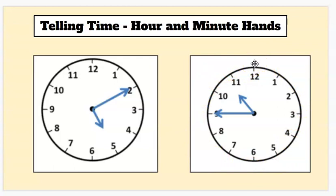Count with me. Zero, five, ten, fifteen, twenty, twenty-five, thirty, thirty-five, forty, forty-five. So this clock is going to say ten forty-five.